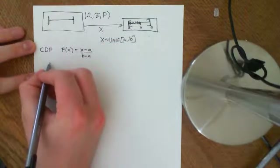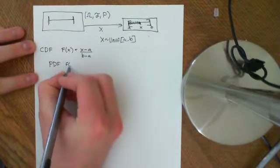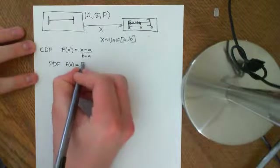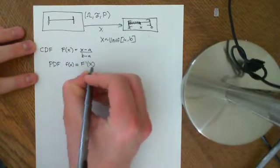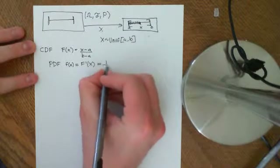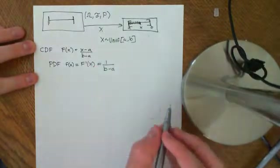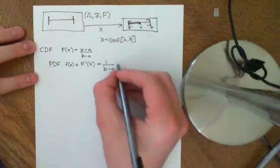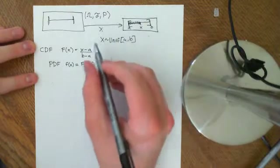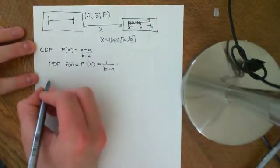From the CDF we can work out the PDF. The PDF, denoted little f, is equal to the derivative of big F with respect to x. Differentiating (x − A)/(B − A) with respect to x gives us 1/(B − A). So the probability density function is just a constant — which is why this is called the uniform distribution.